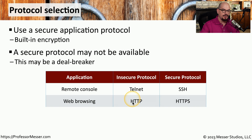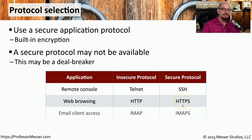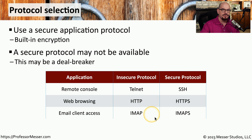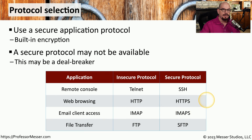For web browsing, instead of using HTTP, you should use the secure version, which is HTTPS. Your email client may be able to be configured with the insecure IMAP protocol, but it would be a much better idea to use the secure and encrypted protocol of IMAP-S. And instead of transferring a file using FTP, you should use the secure version, SFTP.